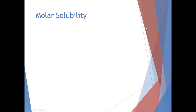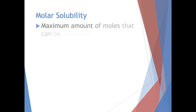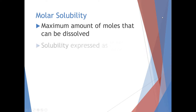First let's discuss what molar solubility is. The solubility we discussed the other day was more of a general solubility, but we can describe solubility in two ways. The first is molar solubility, which the name suggests — it's just the amount of moles that can be dissolved in a particular amount of solvent. In this form, solubility is expressed as moles per liter.